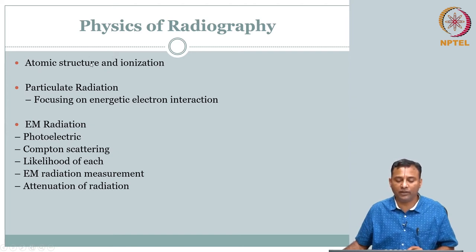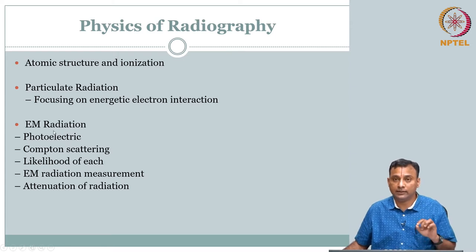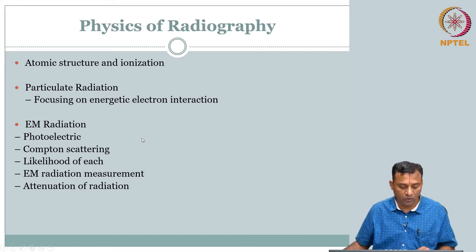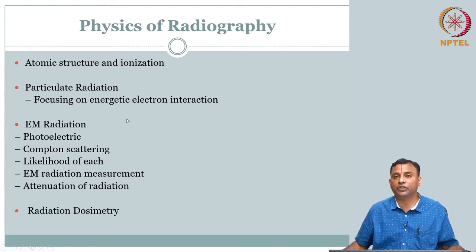We will lead up to the types of radiation in this lecture, and in subsequent lectures we will go one after the other on these topics. These are all subject-specific topics. The first one is atomic structure and ionization. What do we mean by ionization? To define that, we need to start and talk about atomic structure.